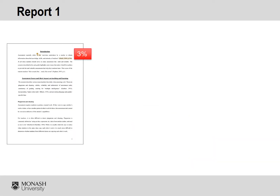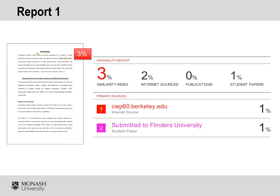The first report is an essay submitted by a third-year student for a teaching unit. The purpose of this assignment was to evaluate the various components of assessment design to make assessment fair, valid and reliable. As you can see, this assignment has received a 3% similarity index from Turnitin, with no matches greater than 1%.